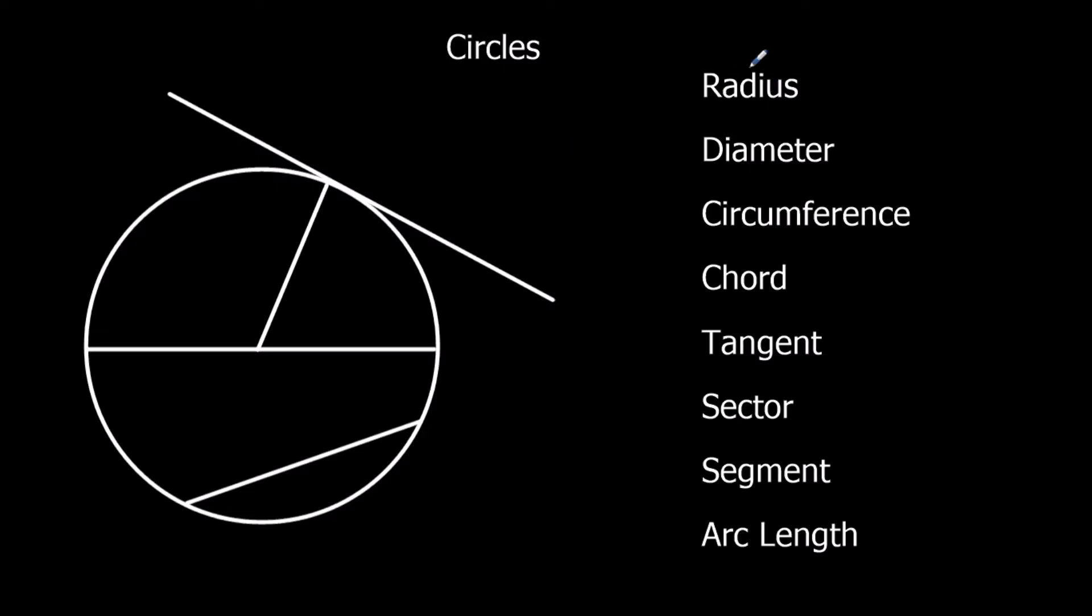We'll start with a radius. A radius is any line that goes from the center to the edge of the circle. So any line that goes from the center to the edge of the circle is called a radius. This one here is a radius.